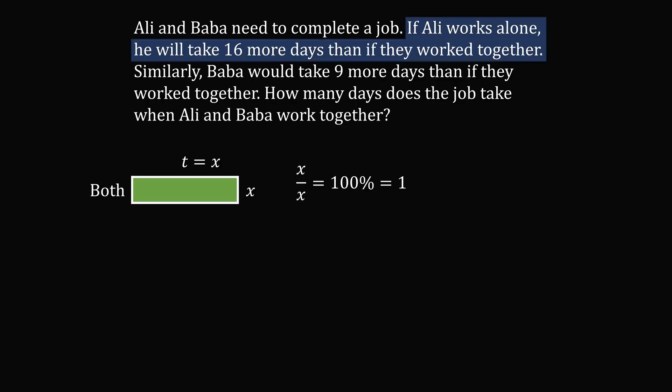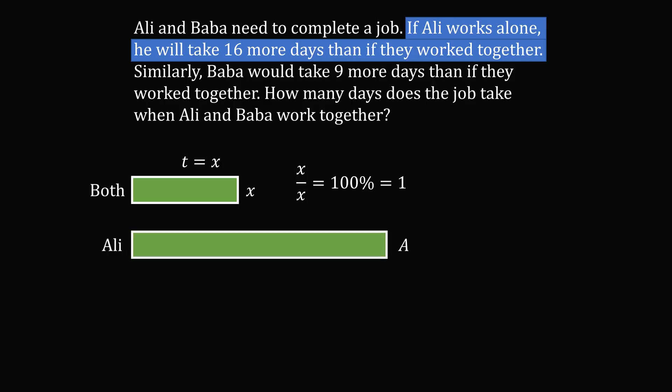Now, we know that if Ali works alone, he will take 16 more days than if they work together. So let's suppose that Ali takes a days, and a is equal to 16 plus x.